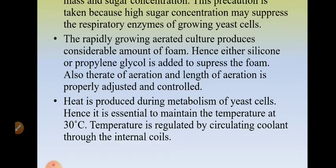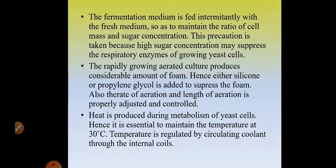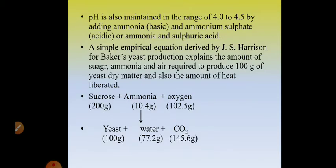The rapidly growing aerated culture produces considerable foam, which must be controlled. Silicon compounds or propylene glycol is added to suppress the foam. The rate and length of aeration is properly adjusted and controlled to get a good yield of yeast cell mass or yeast biomass. Heat is produced during metabolism of yeast cells, so it is essential to maintain the temperature at 30 degrees Celsius. Temperature is regulated by circulating coolant or cold water through internal coils. pH is also maintained in the range of 4 to 4.5 by adding ammonia, ammonium sulfate, or a mixture of ammonia and sulfuric acid.